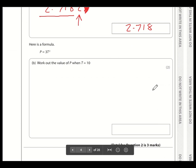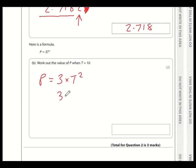Part B, we have been told that T is 10. Well, if P is 3 times T squared, that's going to be 3 times 10 squared. 10 squared is 10 times 10, which is 100. So the calculation is 3 times by 100, which is 300.